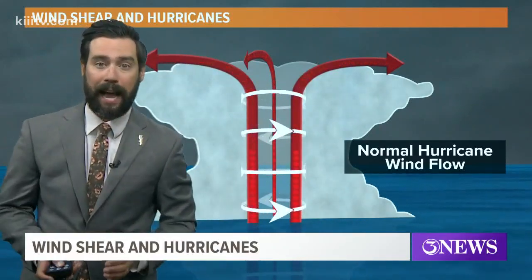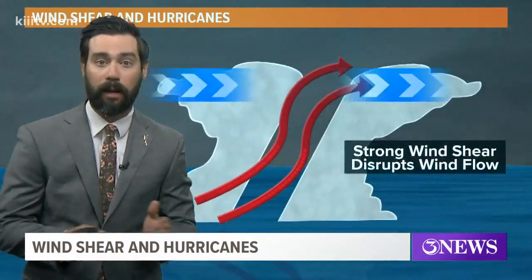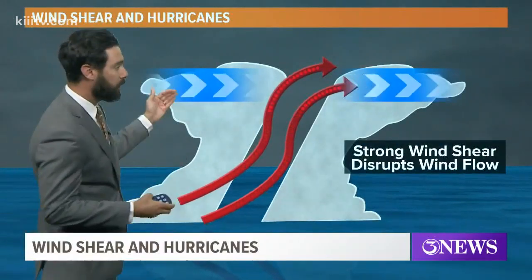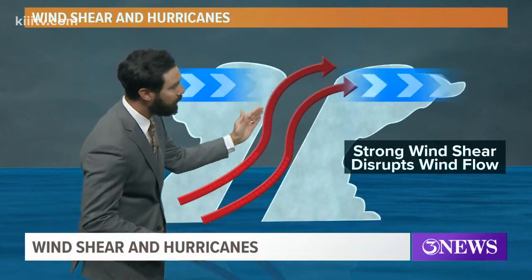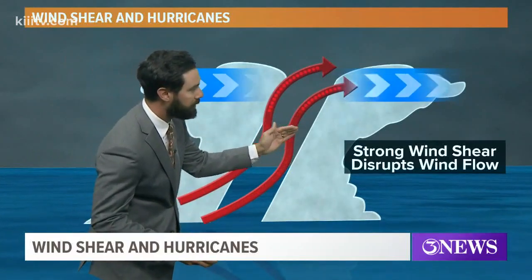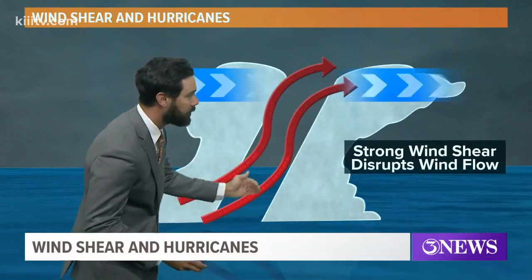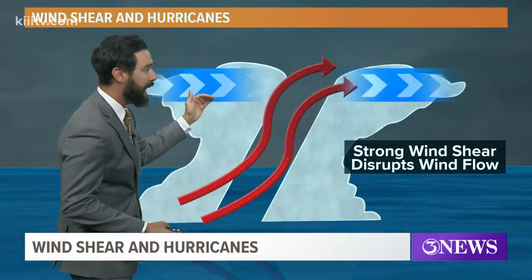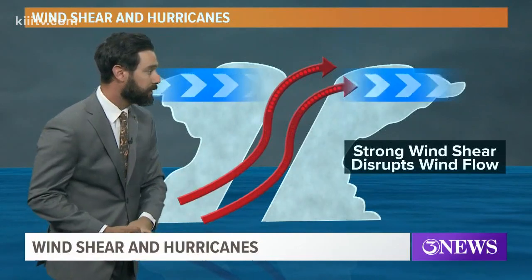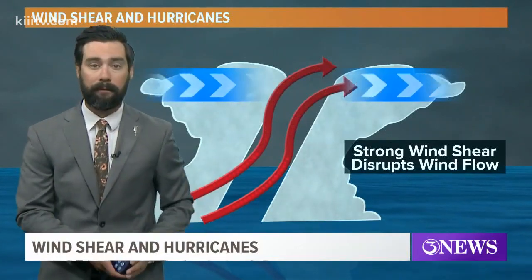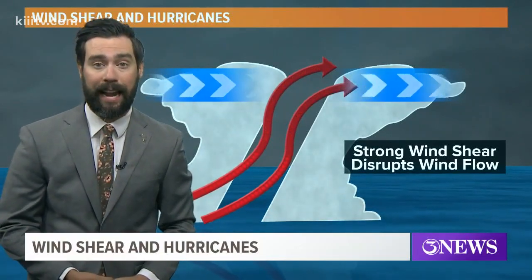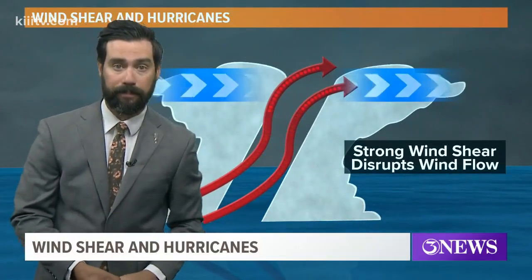When you disrupt that — if a storm comes into wind shear — the faster winds aloft tilt that process. It tilts the core of the storm, which effectively disrupts the wind flow, and it can tear hurricanes apart.